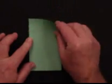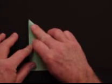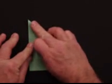First, we're going to start with one corner, fold it over like this. This is a form of origami.